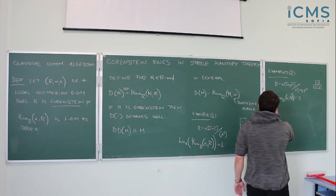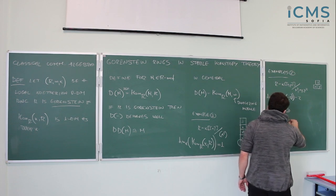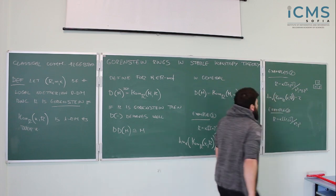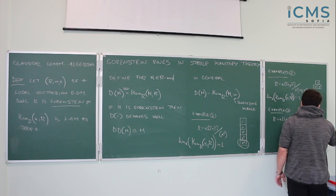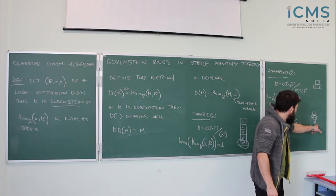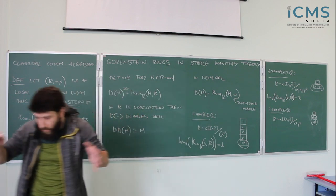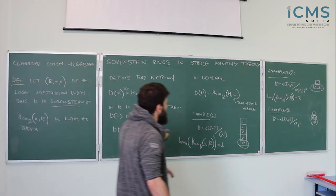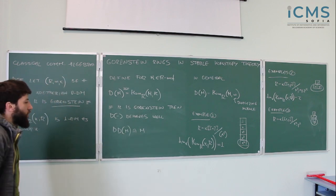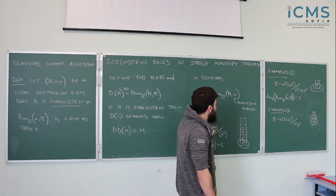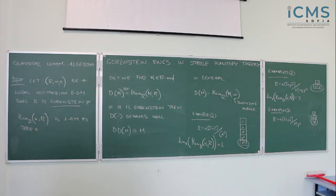I can make this ring Gorenstein if I kill a bit less. If I instead look at R as formal power series in x and y, killing only x squared and y squared, and draw my block picture, I now have 1, then x and y, and then xy at the bottom. The dimension of the corresponding Hom is one, generated exactly by xy. The way you should think of a Gorenstein ring is: if you draw this picture and flip it upside down, if it's symmetric and looks like the original picture, then your ring is Gorenstein. This one does, whereas the previous one does not.